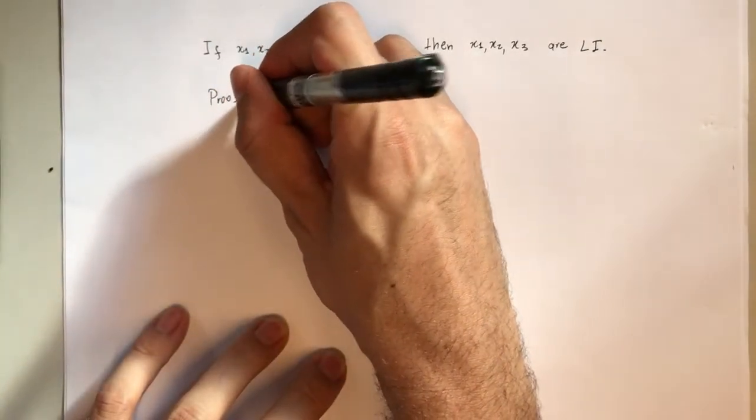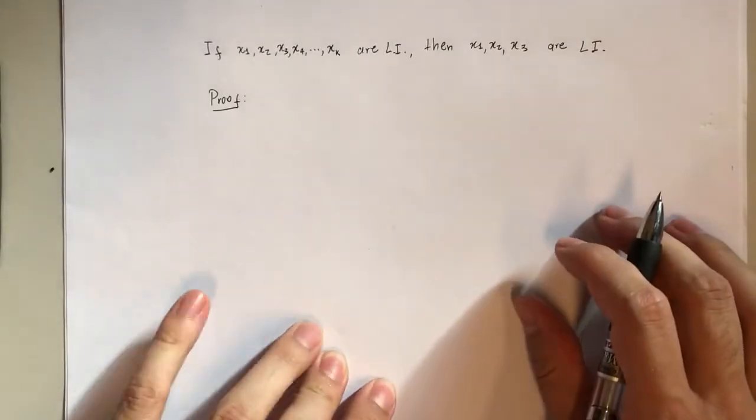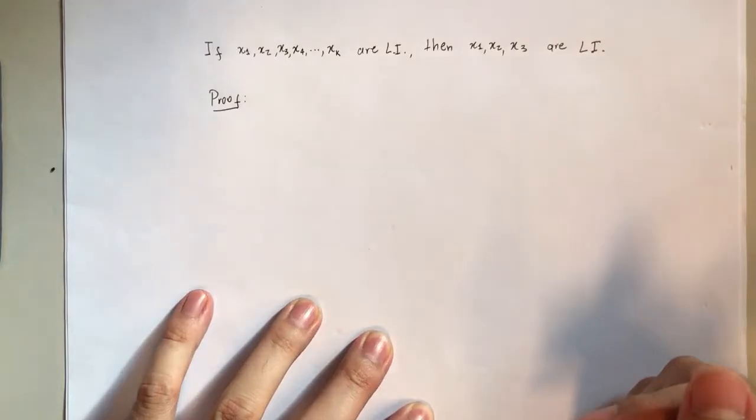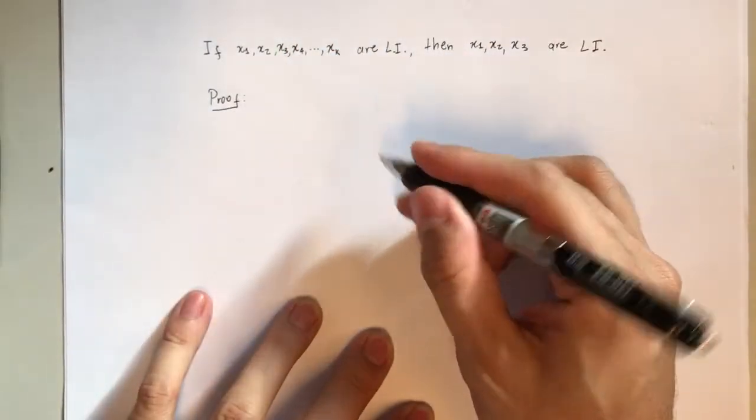Proof. How do we prove that three vectors are linearly independent? Well, there are many different theorems that you can check to conclude that they are linearly independent. We'll just check the definition directly,